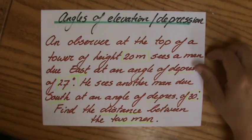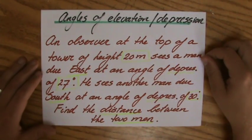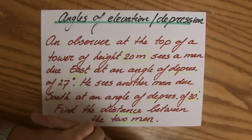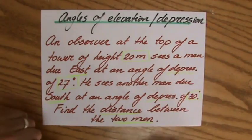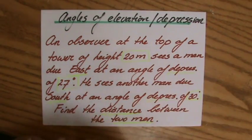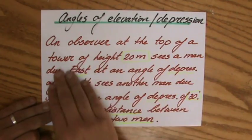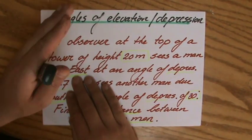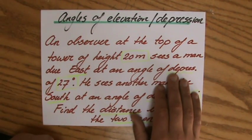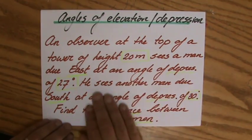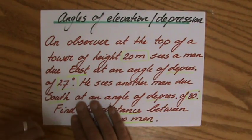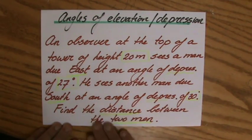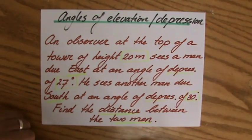I got a lovely question from one of you who asked me on my site explainingmaths.com or on my Facebook for help about angles of elevation and depression. This is the situation. I already highlighted some key information. An observer at the top of a tower of height 20 meters sees a man due east at an angle of depression of 27 degrees.